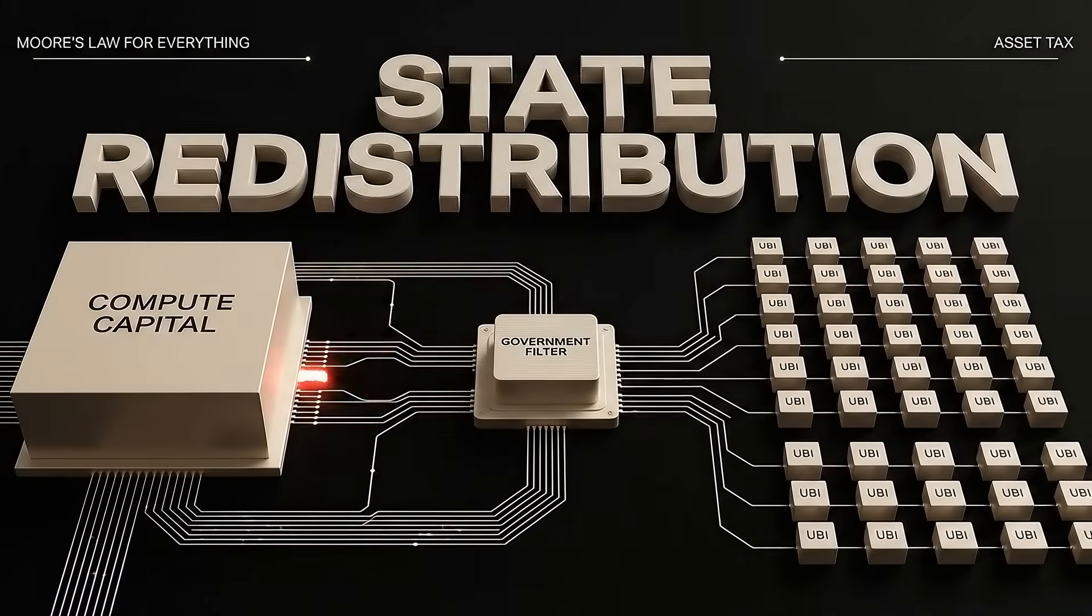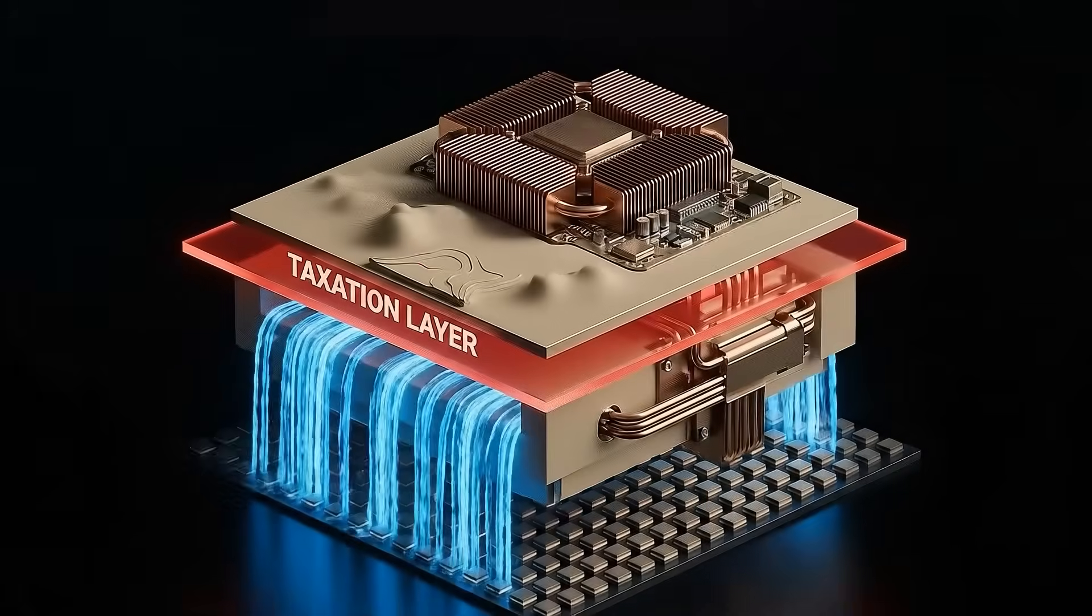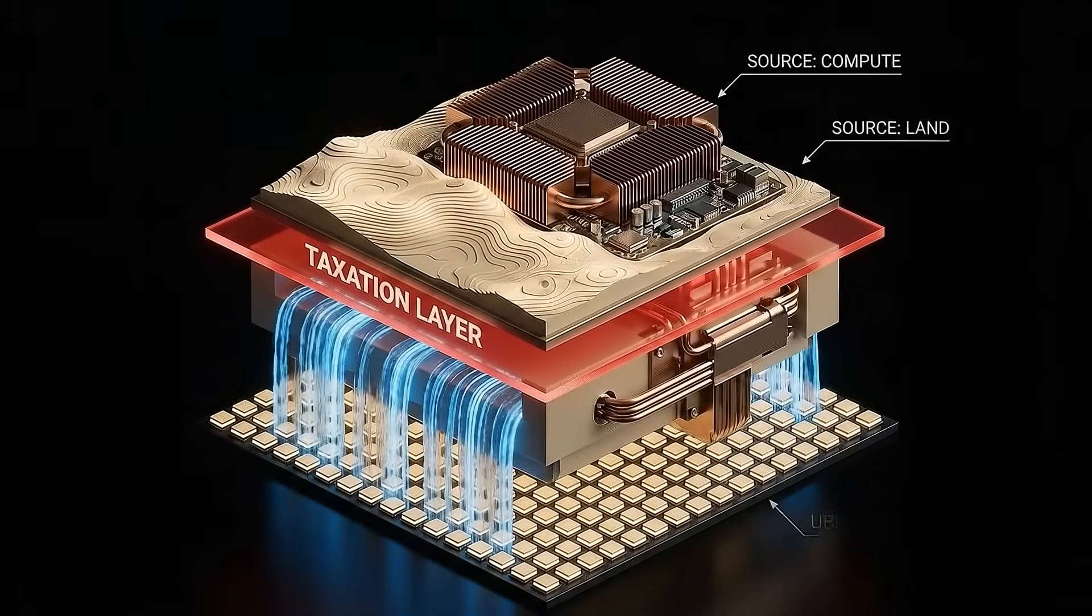Path 2. State Redistribution. This is what Sam Altman calls Moore's Law for Everything. The idea is that because AI creates so much wealth so cheaply, the government taxes the land and the computing and redistributes it as UBI, Universal Basic Income.